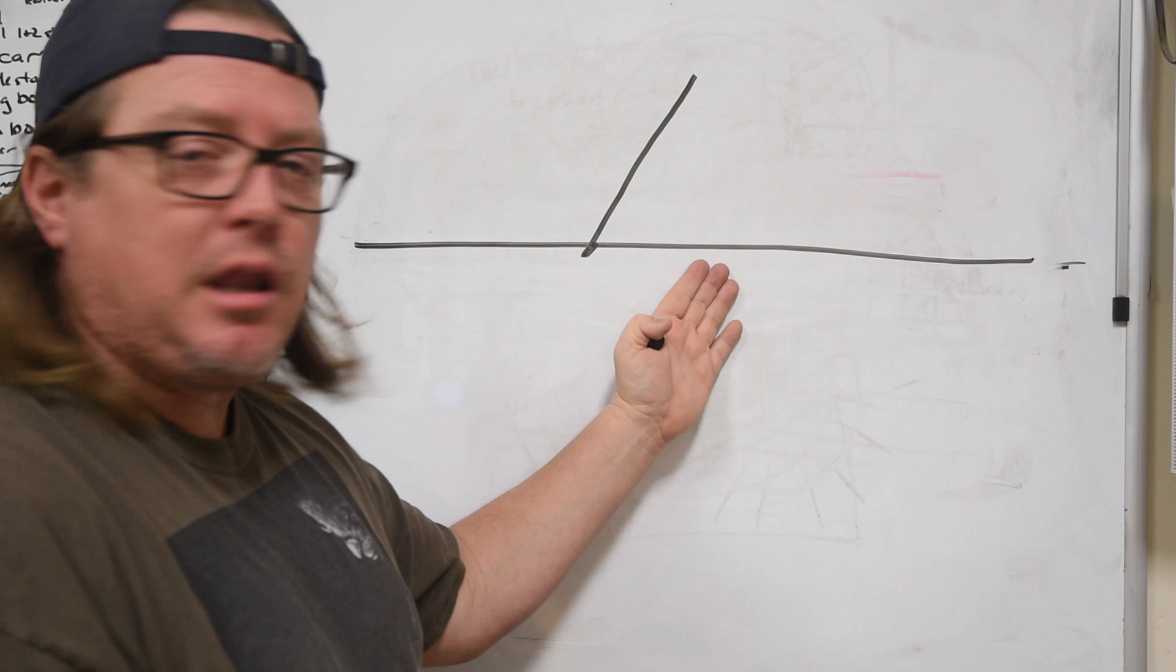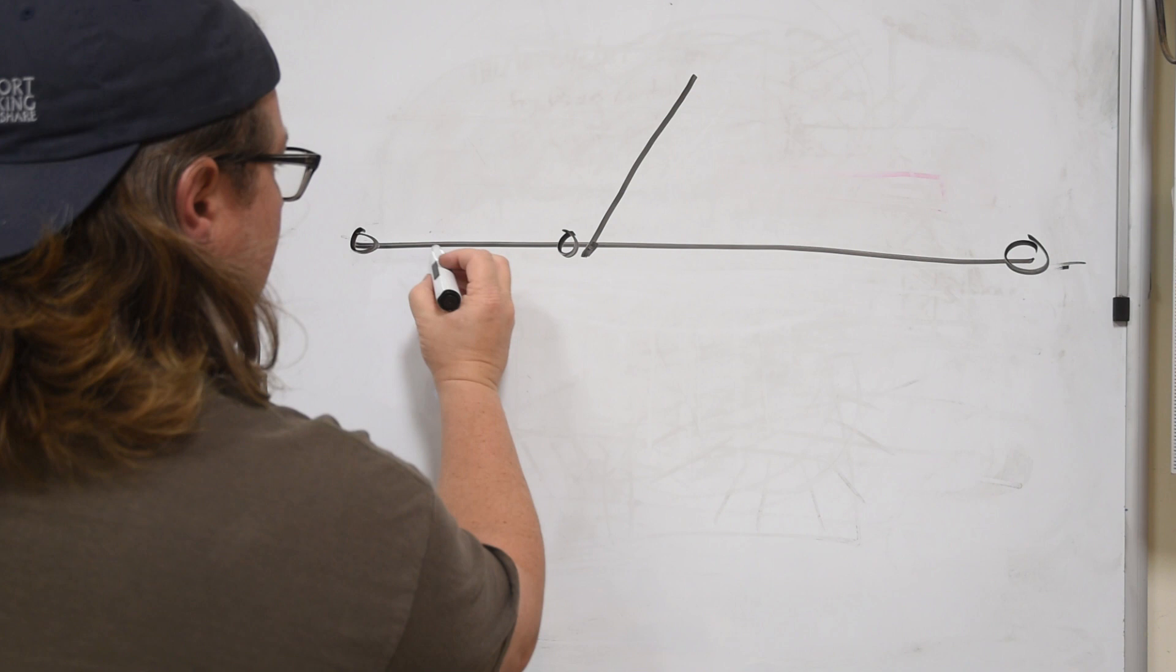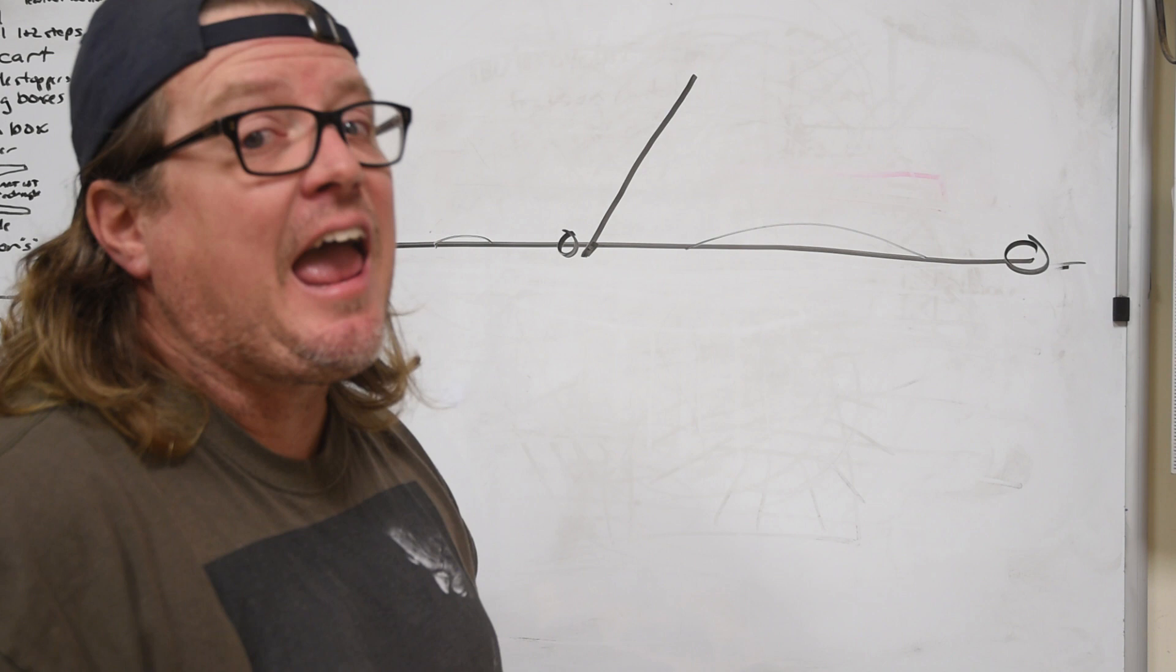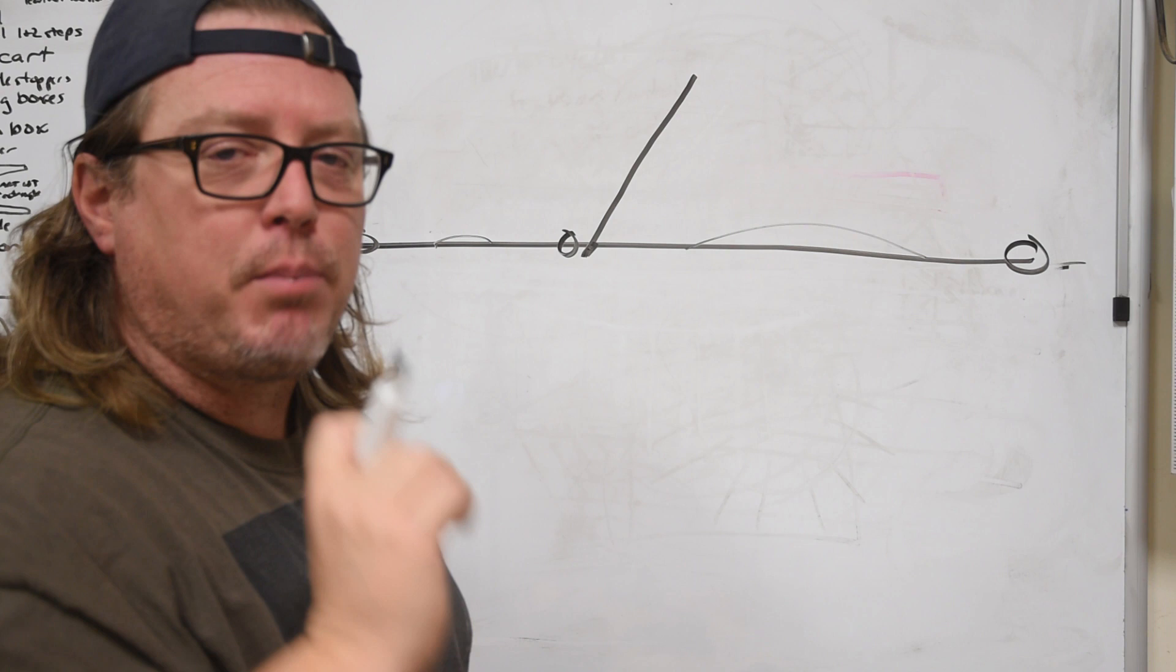But this only works if the hand plane is dead flat on bottom. And in actuality, all you need it to be is in a parallel line at these three points. If it cuts up underneath here or underneath here, it really doesn't matter. It's nice to have something dead flat, because you can use it as a reference surface. But when you're flattening the bottom of a plane, those are the only three points you really need to be concerned with. Once they are in line, the plane will work properly.